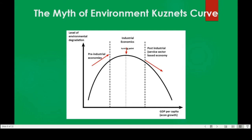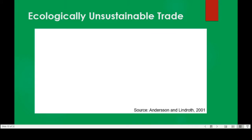The environmental Kuznets curve is a famous curve in environmental economics. It talks about how as a country becomes more and more rich, they will care about environmental degradation more, so environmental degradation will actually decrease. When GDP per capita is very low, environmental degradation rises along with GDP per capita; then it reaches a turning point or peak when becoming an industrial economy, and then turns into a post-industrial service-based economy and environmental degradation reduces. This ignores unequal ecological exchange between countries, because the reduction in environmental degradation might simply be because countries are importing more and more of their resources from other countries.